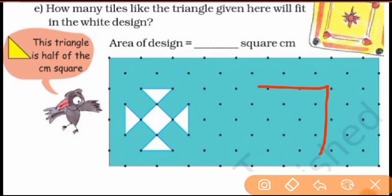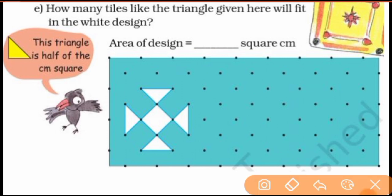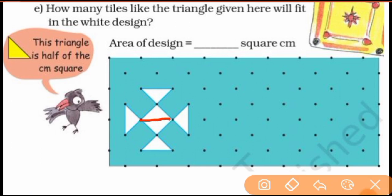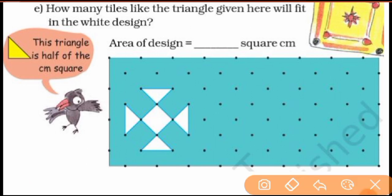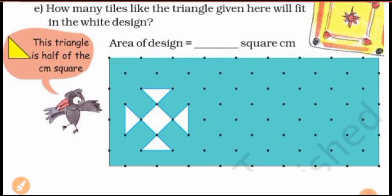If you cut a square, you get two triangles — one and two. So count the squares: 1, 2, 3, 4 — and each square has two triangles. So four squares give us four triangles from the complete ones, plus two more triangle tiles. Four plus two equals six tiles. The answer is six tiles.